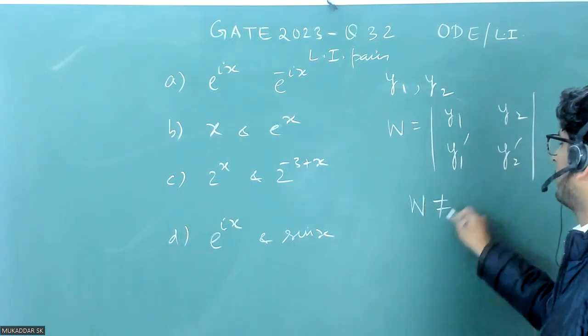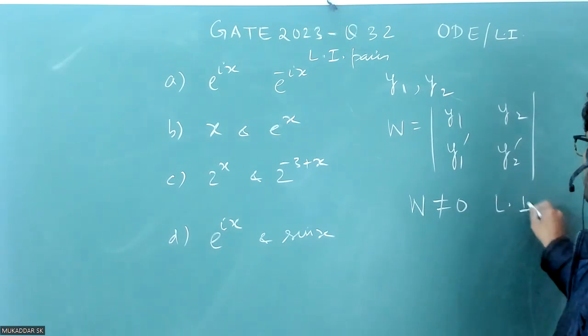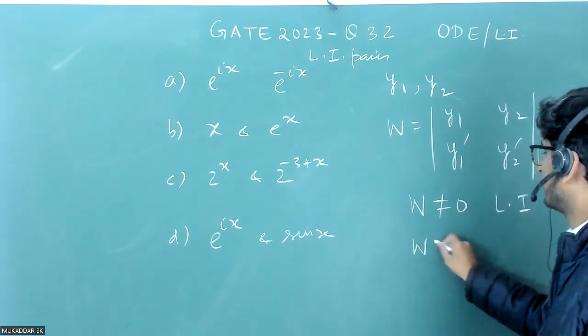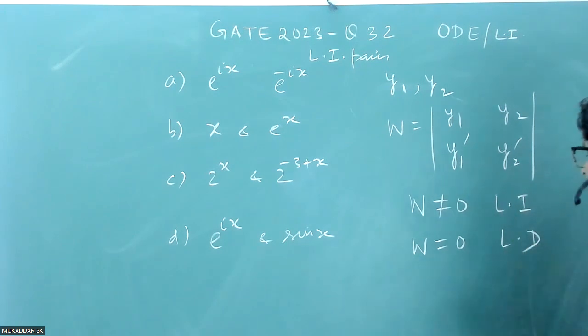If Wronskian is not equal to zero, then the solution is linearly independent. And if the Wronskian is equal to zero, then the solutions is linearly dependent.